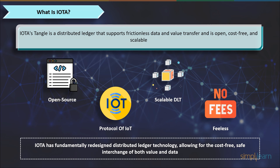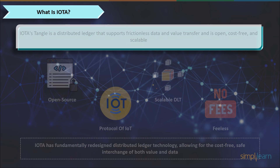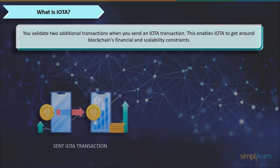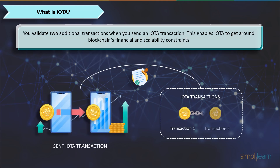Also, IOTA has no blocks and no miners policy, which means you validate two additional transactions when you send an IOTA transaction. And this enables IOTA to get around blockchain's financial and scalability constraints. In short, IOTA is positioned to be a key player in the upcoming industrial revolution by facilitating business interactions between machines and connecting the economies of people and machines.